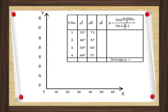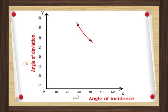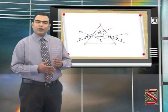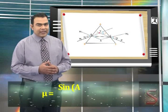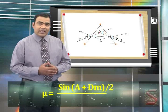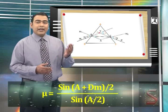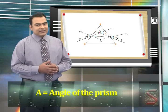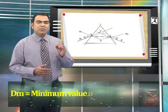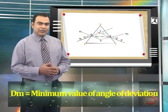Plot a graph with angle of incidence on the x-axis and the angle of deviation on the y-axis. You will see that a U-shaped curve is formed. Use the formula μ is equal to sin(A + Dm)/2 by sin(A/2) where A is the angle of the prism which in this case is 60 degrees and Dm is the minimum value of angle of deviation.